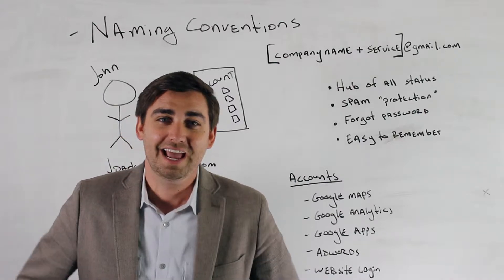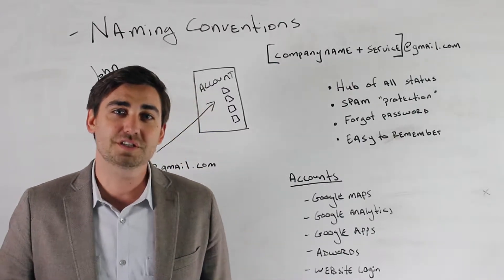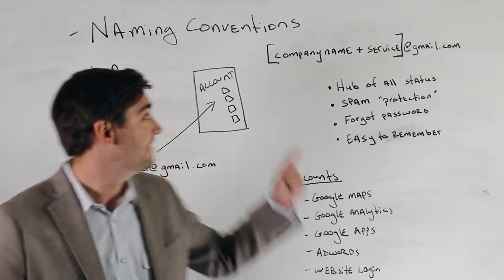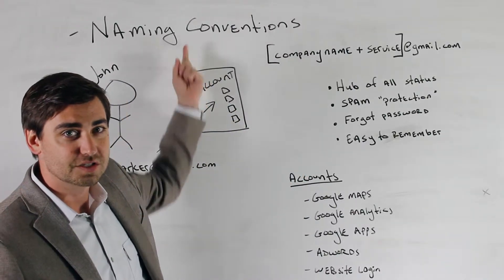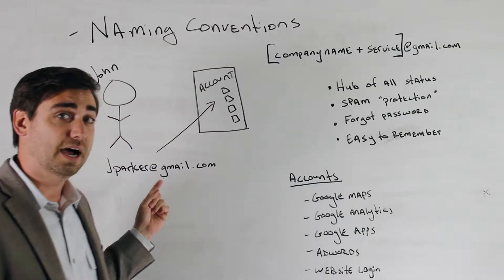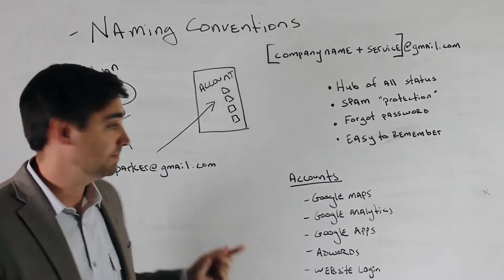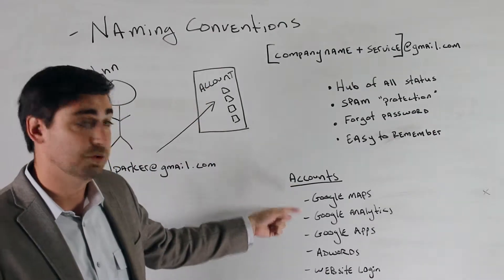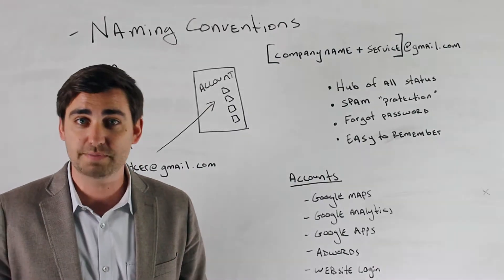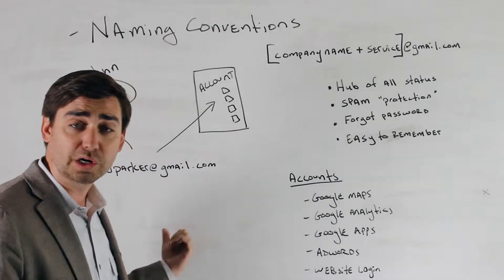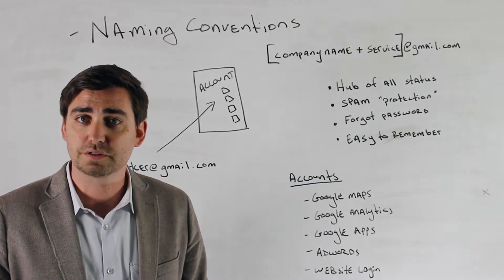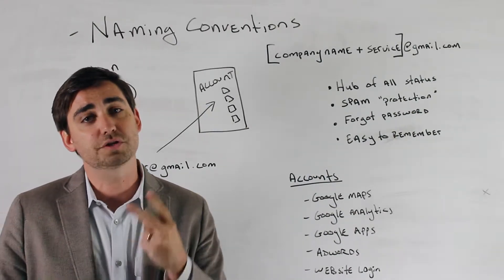Hey, this is Tommy Hoban with Discover Tech. Today we're going to talk about pitfalls of internet marketing. The first thing we're going to talk about is a basic one — your naming convention. For example, we've got John Parker who has set up specific accounts like Google Maps, Analytics, AdWords, and maybe even the login to your website. What happens when Mr. Parker leaves the office and decides to go somewhere else? That's where a problem comes in.